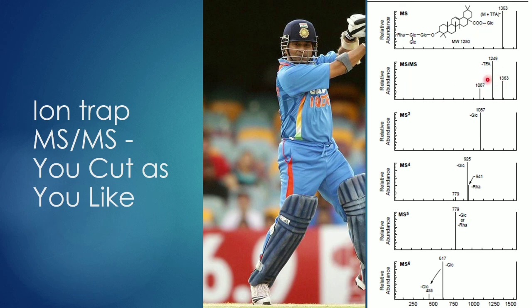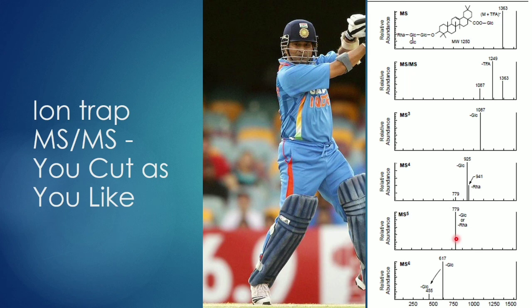Then I can select the fragments — I am interested only in the fragment of mass 1249. Again that 1249 I can cut into many pieces, and from that again I can select only one ion and cut it again. This is a very good technique especially when doing structural elucidation, particularly for protein sequencing — I can cut each amino acid step by step and then do the structural elucidation.